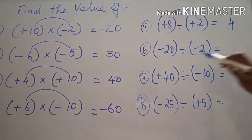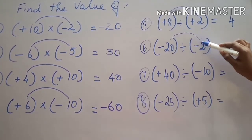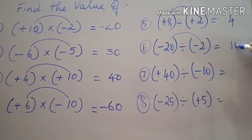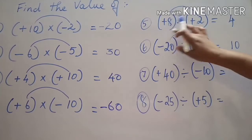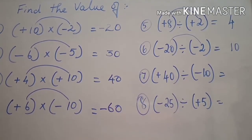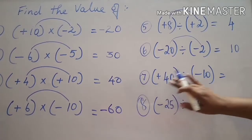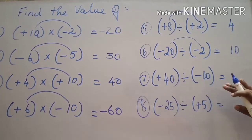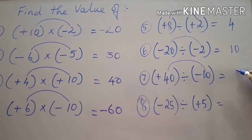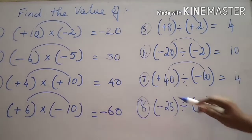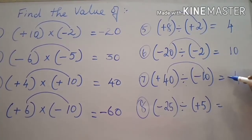Sixth sum: minus twenty divided by minus two. Divide the numbers: twenty divided by two is ten. Both are negative numbers, symbols are the same — same sign means the answer is positive: positive ten. Seventh sum: plus forty divided by minus ten — one is positive and another is negative. Divide: forty divided by ten is four. Positive and negative is different sign, so we put minus: negative four.